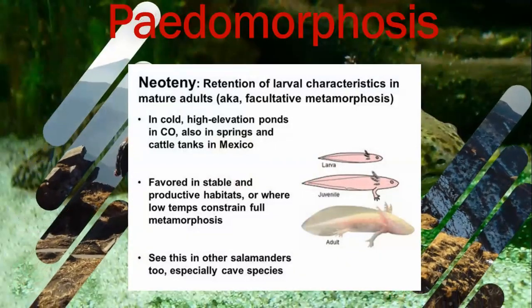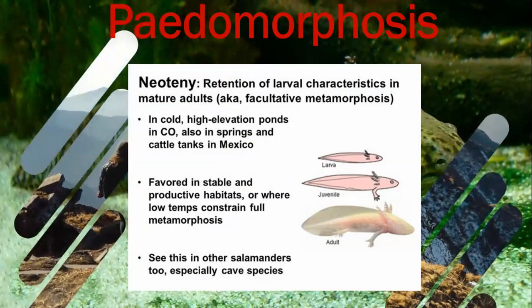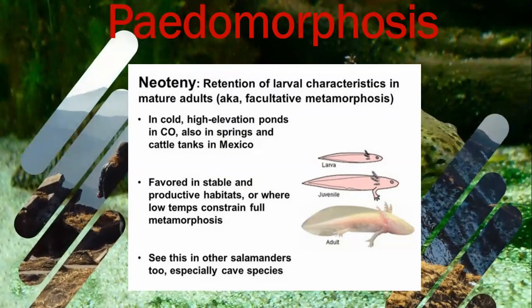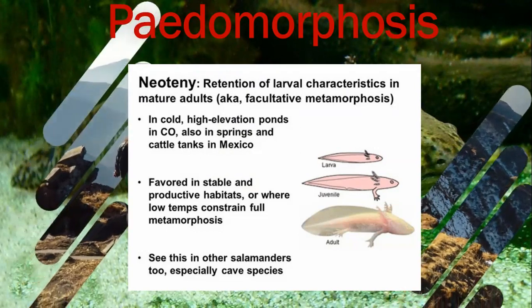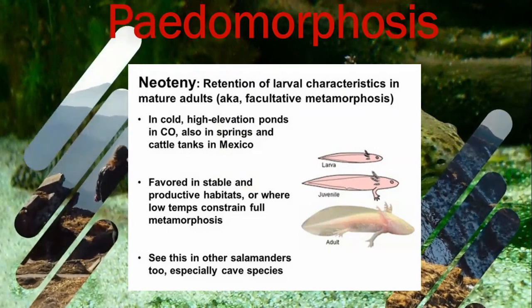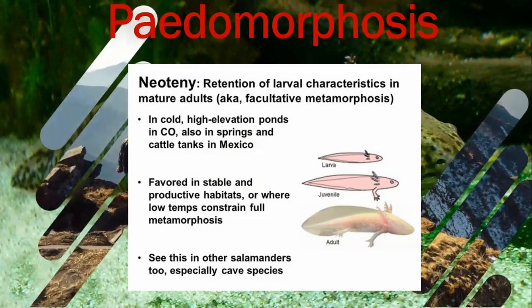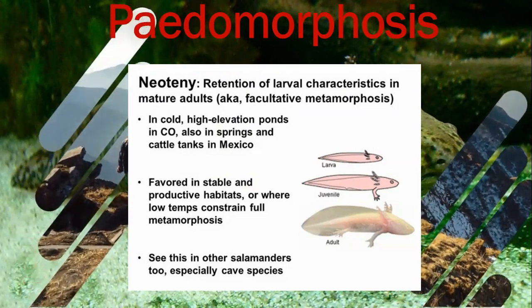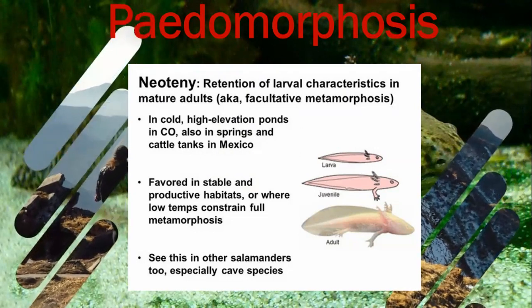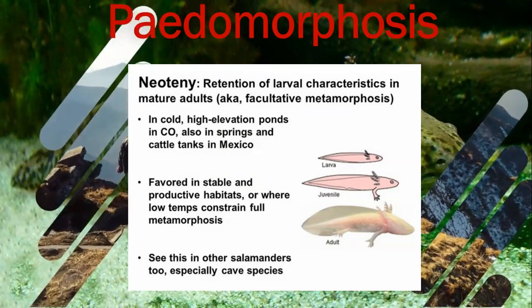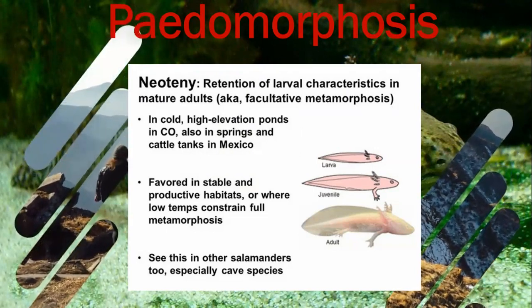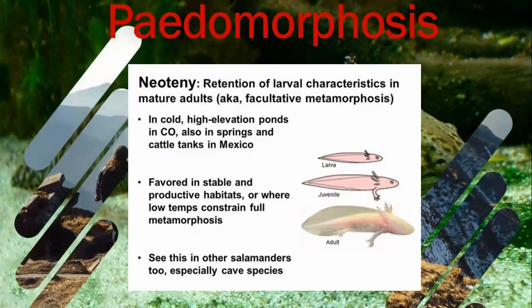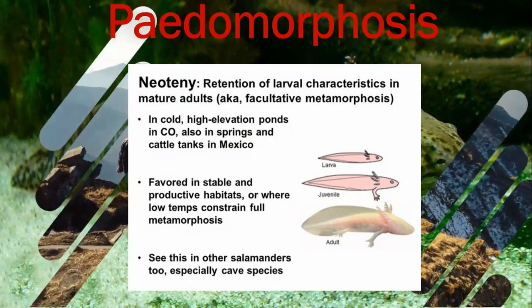The second example is neoteny, in which larval characters are retained even at the adult stage. For example, salamanders in stable and productive habitats where low temperature constrains full metamorphosis. In high elevation areas with cold regions, such as cattle tanks in Mexico, salamanders remain in a larval-like mature stage — as seen in the amphibian picture in the background, with gill retention visible.